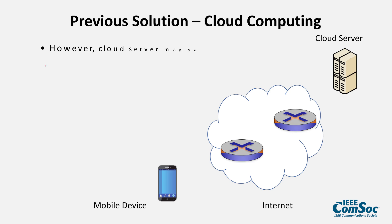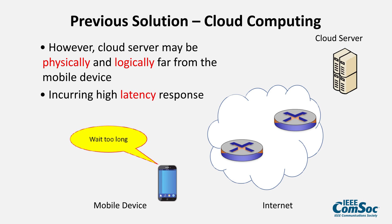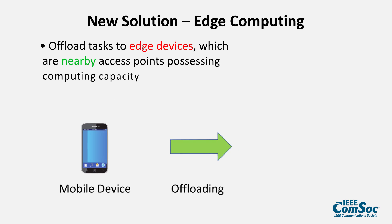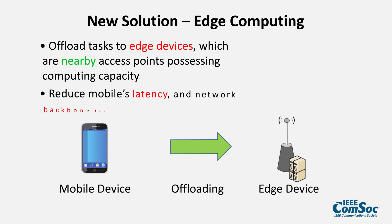However, the cloud server may be physically and logically far from the mobile device, which incurs high latency response. Therefore, tasks are offloaded to edge devices, which are nearby access points with processing and computing capacity. As a result, we reduce the mobile device's latency and the network backbone traffic.